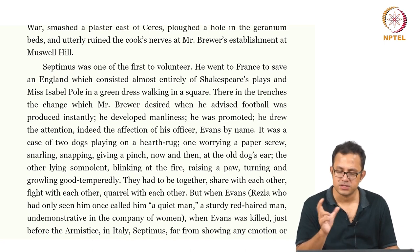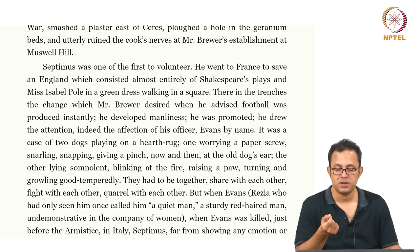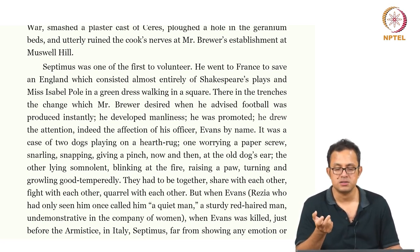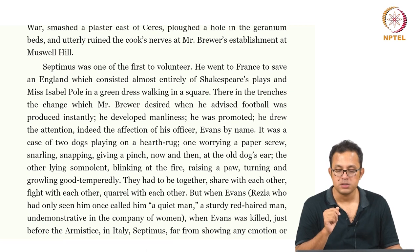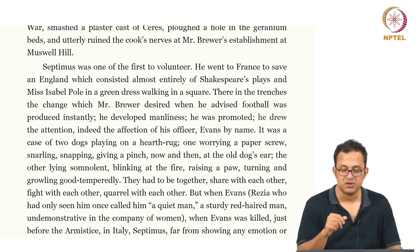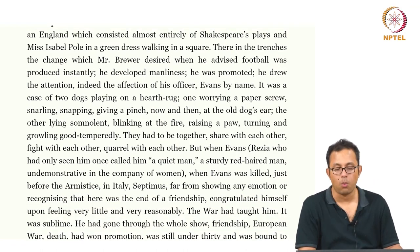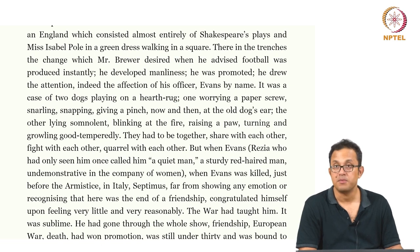Look at the very covert description: he drew the attention, indeed the affection of the officer Evans by name. The affection could be erotic, entirely platonic, military, or collegial — we do not quite know, but the word is obviously quite loaded. It was a case of two dogs playing on a hearth rug, one wearing a paper screw, snarling, snapping, giving a pinch now and then at the old dog's ear, the other lying somnolent, blinking at the fire, raising a paw, turning and growling good-temperedly. They had to be together, share with each other, fight with each other, quarrel with each other. Rezia had only seen Evans once, called him a quiet man, a sturdy red-haired man, undemonstrative in the company of women. When Evans was killed just before the armistice in Italy, Septimus, far from showing any emotion or recognizing that there was an end of a friendship, congratulated himself upon feeling very little and very reasonably.